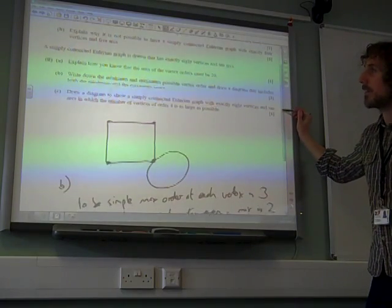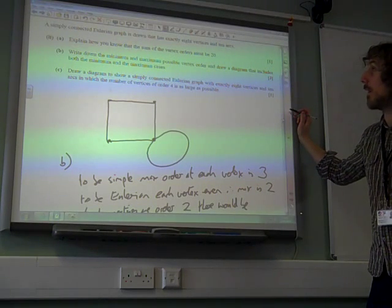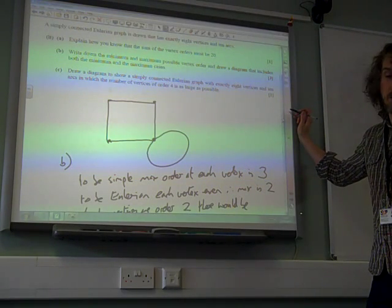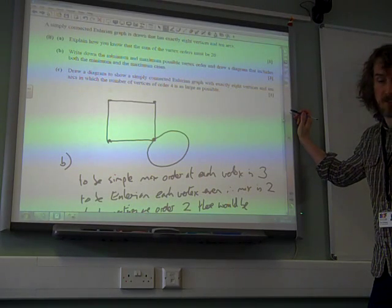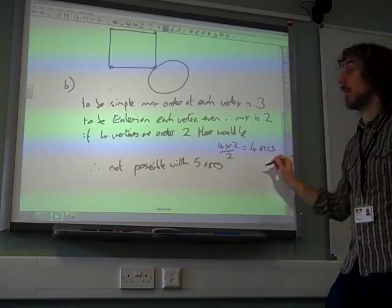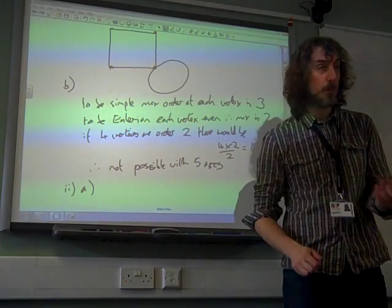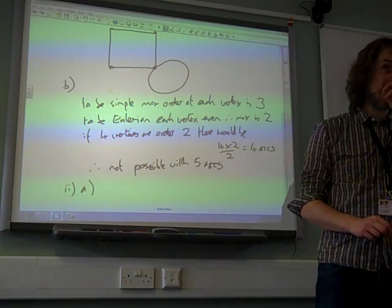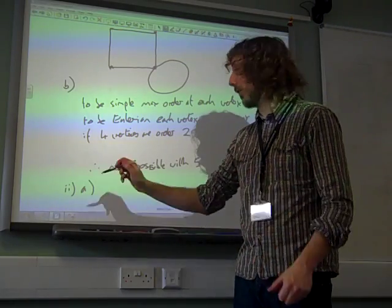Now, part two. A simply connected Eulerian graph is drawn that has exactly eight vertices and ten arcs. Explain how you know that the sum of the orders must be 20. Well, actually, we've already referred to this, haven't we? Part two a, sum of the orders must be 20, because every arc counts twice to the token. Because every arc has two ends.